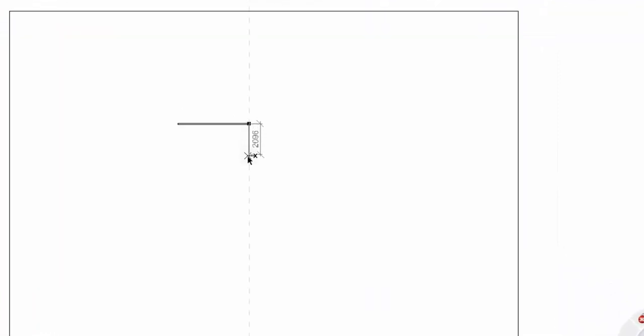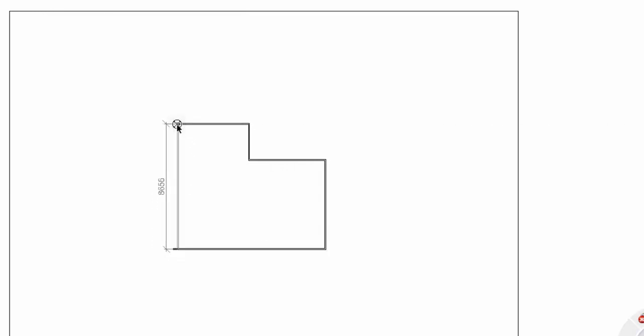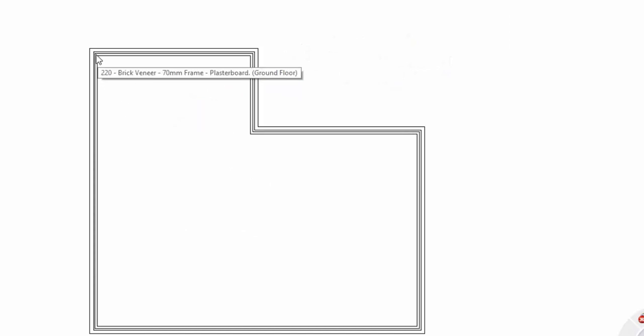I prefer just to freehand the walls in to approximate dimensions as I'm clicking around. When I come to the end of it, you basically just click it and right click and go finish. And if you come in close, you'll see that it expands out to the correct wall shape.